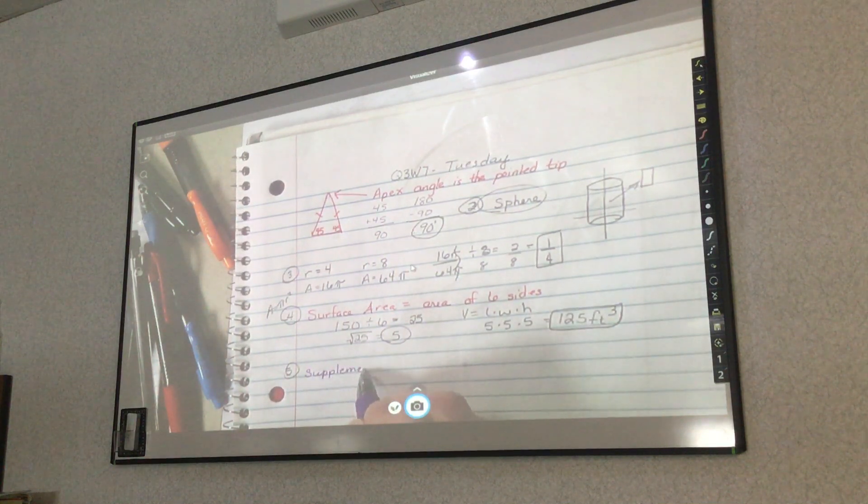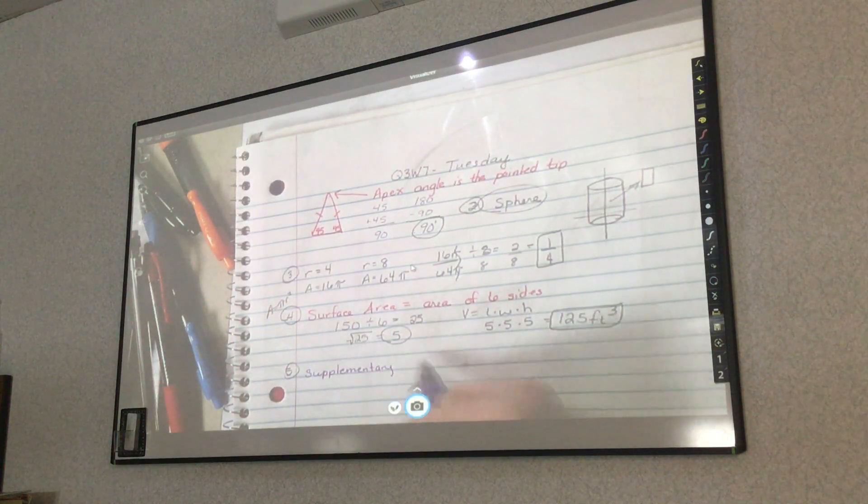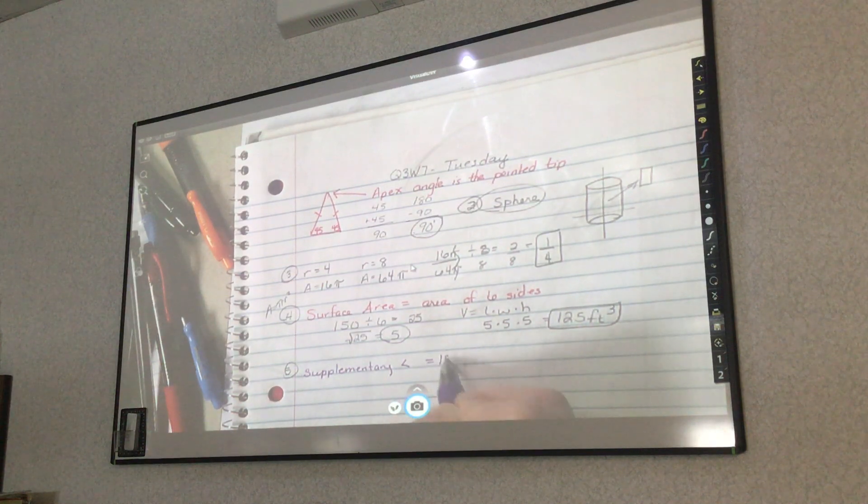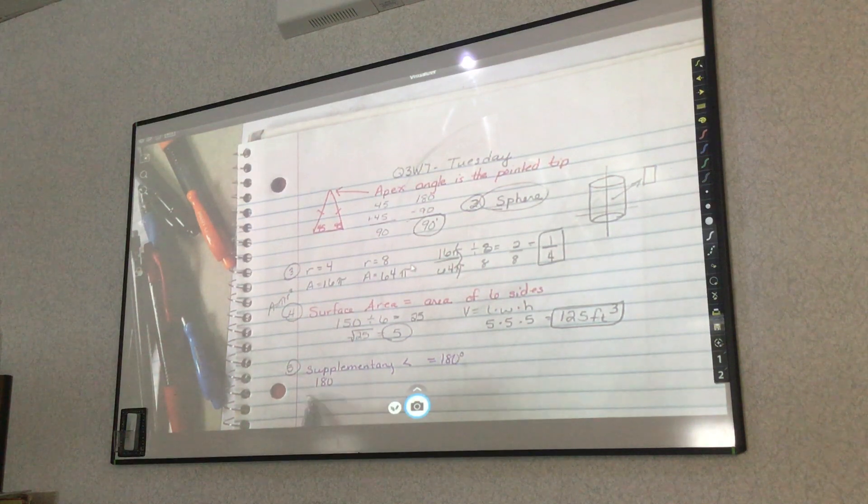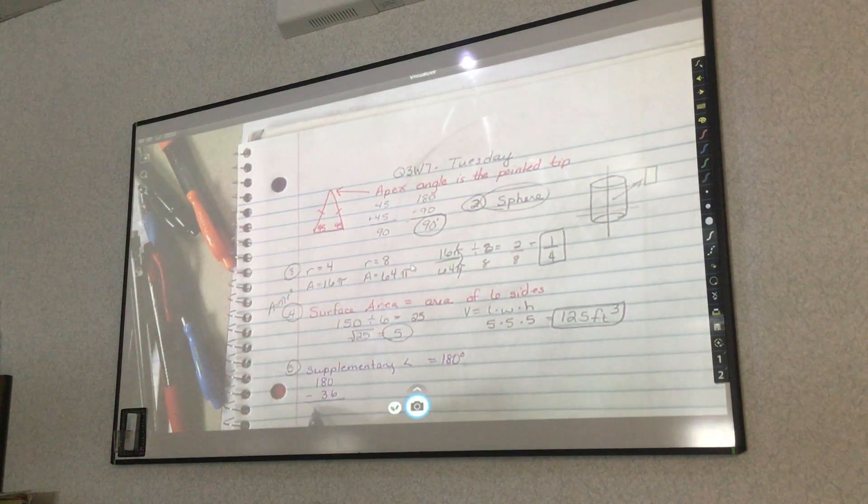Supplementary. Got to get that memorized. Angles equal 180 degrees. So if I've got 36, I take 180 minus 36, I get 144 degrees.